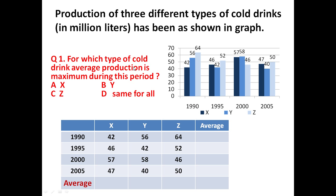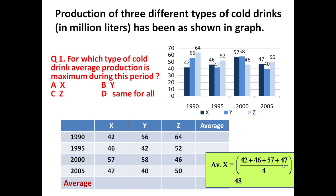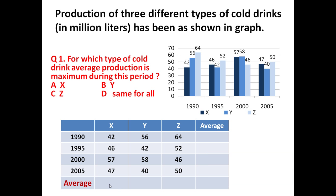The question is: for which type of cold drink is average production maximum during the period 1990 to 2005? If we look at production of X — it was 42, 46, 57, and 47 million litres in these consecutive years. To determine the average, just add these four values and divide by 4: 42 + 46 + 57 + 47, divided by 4.